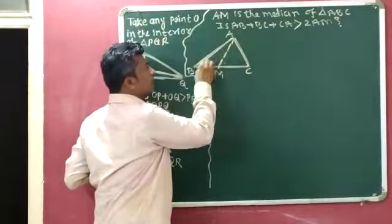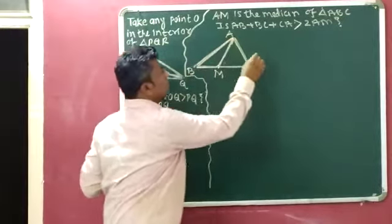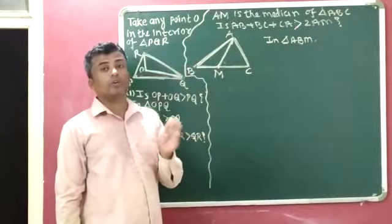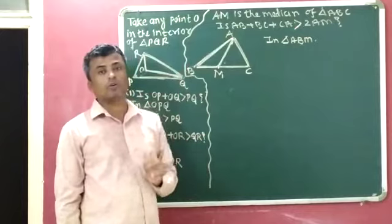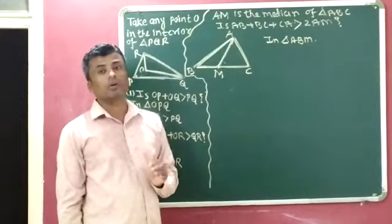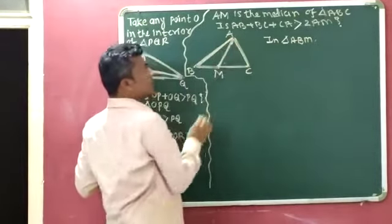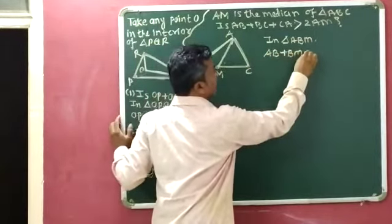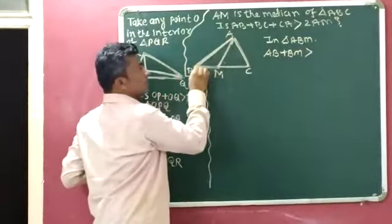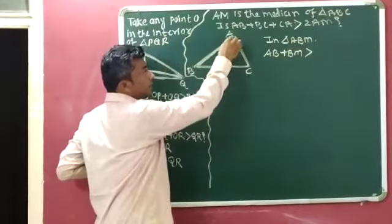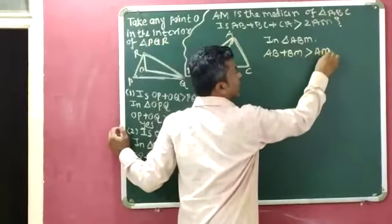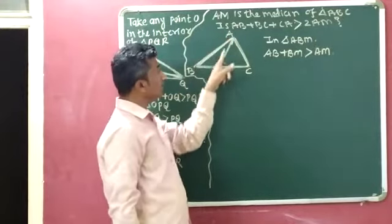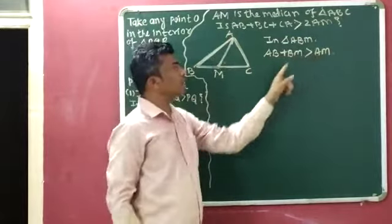First we will consider triangle ABM. In triangle ABM, according to the side length property of the triangle, the sum of the length of any two sides is greater than the length of the third side. So AB plus BM is greater than the third side AM. This is equation 1.